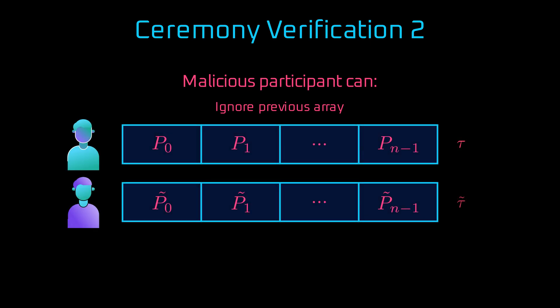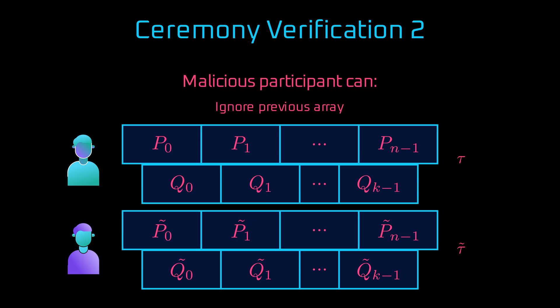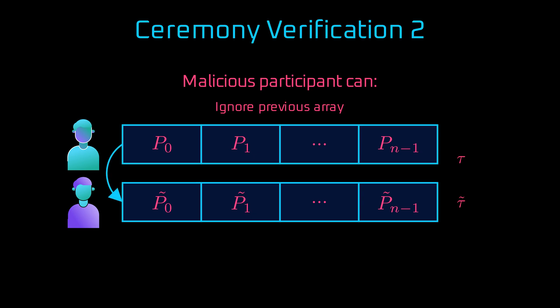In another scenario, a malicious participant can ignore the previous array entirely. Instead of continuing from P, they might start a new array, P-tilde. Apart from these arrays, we also still have other arrays, Q and Q-tilde, that correspond to generator point G2. Here, we must verify that P-tilde is correctly derived from P. We once again use pairings to ensure the continuity. We have to remember that the first argument of the pairing is associated with generator point G1 and the second argument with G2. So in our case, P and Q respectively. We take the operation on P and Q-tilde, which is tau-tilde times G2. So we can once again use the property of pairings and move tau from one argument to another. Thus, the pairing on an element from the original array and Q-tilde should equal the element from the new array. If the verification passes, together with the previous check, it confirms the new array P-tilde is a valid continuation from the previous array.